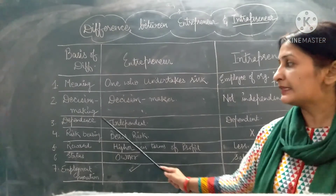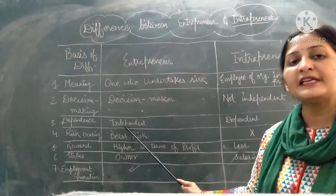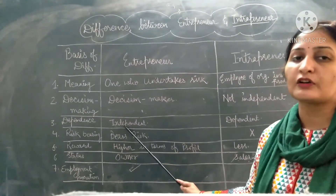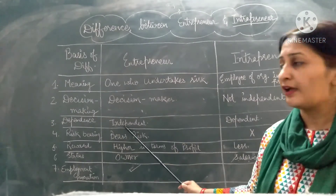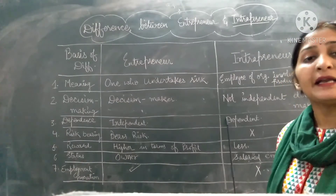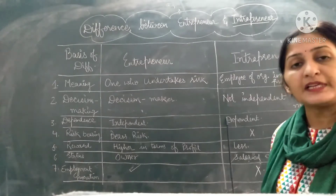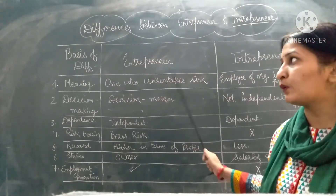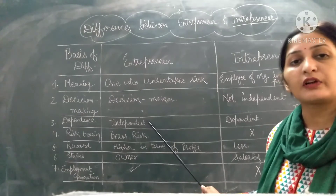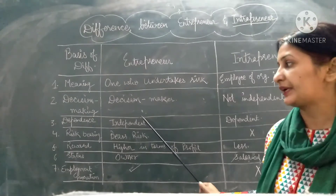The next differentiating point is of dependence. The entrepreneur is independent in his or her working, whereas the intrapreneur is dependent upon the entrepreneur for his or her work.